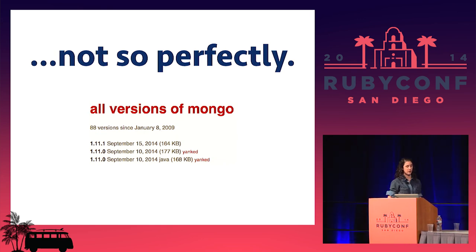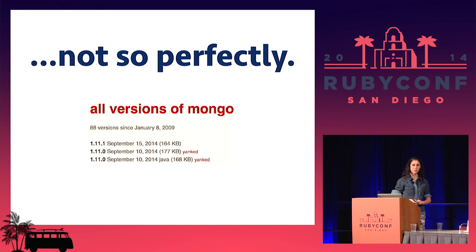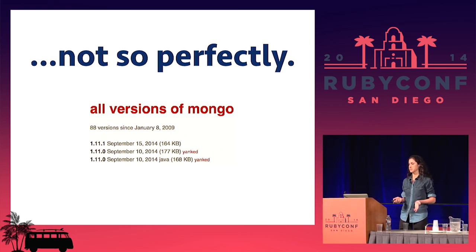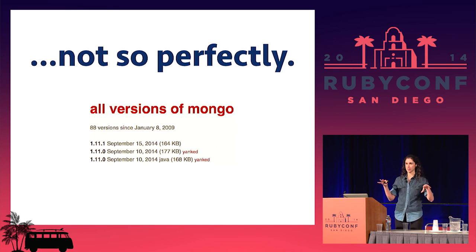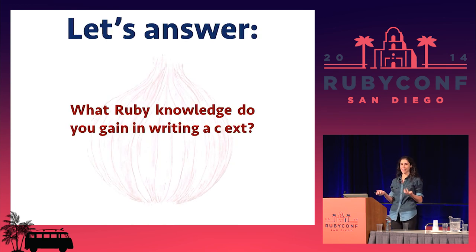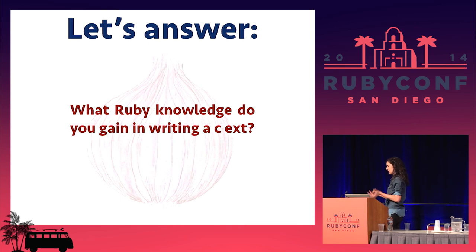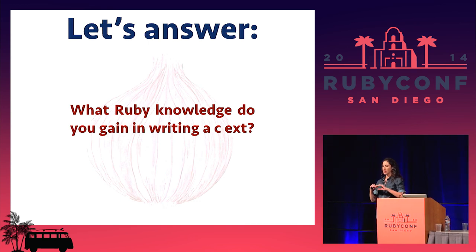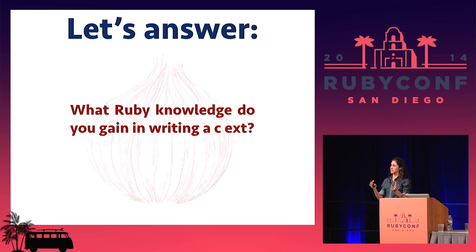Let's talk about what it means to write a C extension, why you shouldn't be afraid of it, and what you can get out of it. Thinking about Ruby as an onion in the context of MRI — Ruby is a very high-level, elegant, expressive language, but underneath all of that there's a lot of C code. There are increasing layers of abstractions on top of the C code, and eventually we get up to a gem that's released with an extension written at the core of this Ruby red onion.